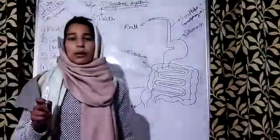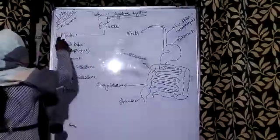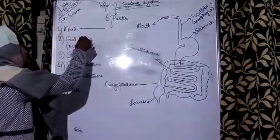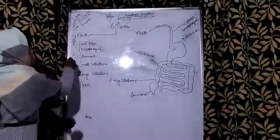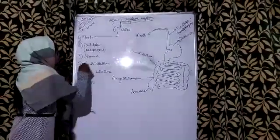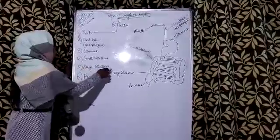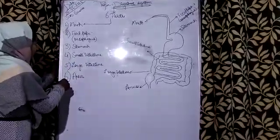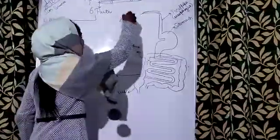This digestive system consists of six parts. The first is the mouth. Second is the esophagus, also known as the food pipe. Third is the stomach. Fourth is the small intestine. Fifth is the large intestine. And the sixth and last one is the anus.